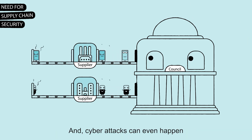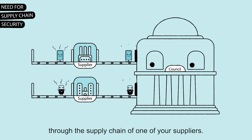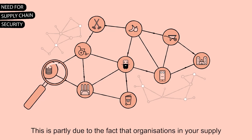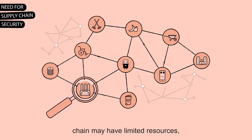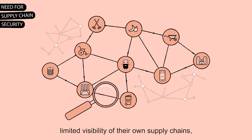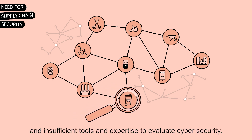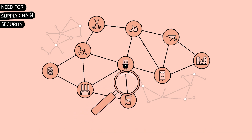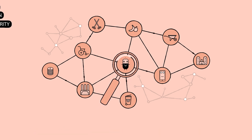Cyber attacks can even happen through the supply chain of one of your suppliers. This is partly due to the fact that organisations in your supply chain may have limited resources, limited visibility of their own supply chains, and insufficient tools and expertise to evaluate cyber security. So what does a council do to deal with supply chain risk?